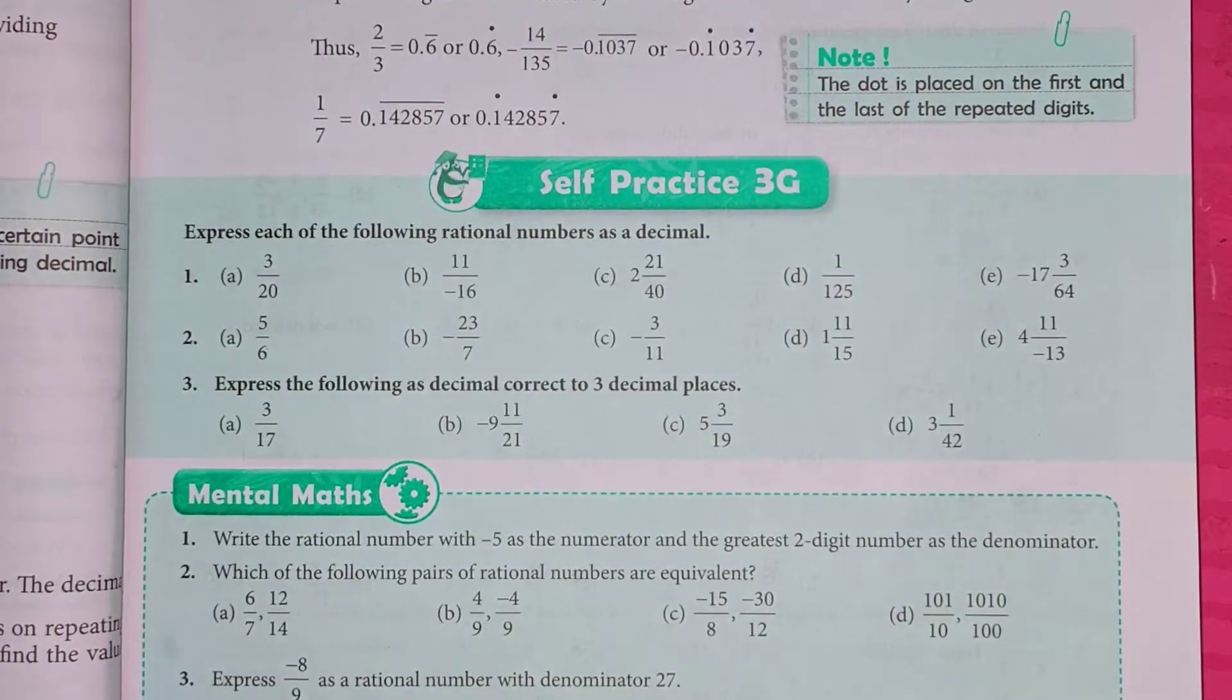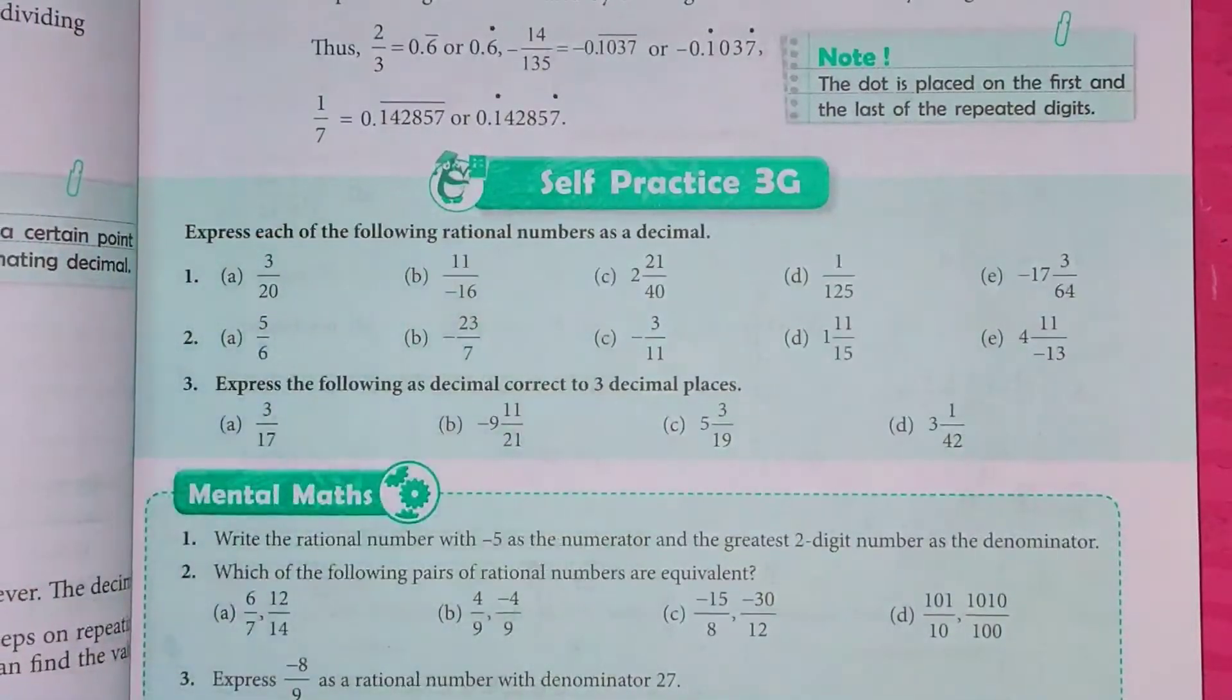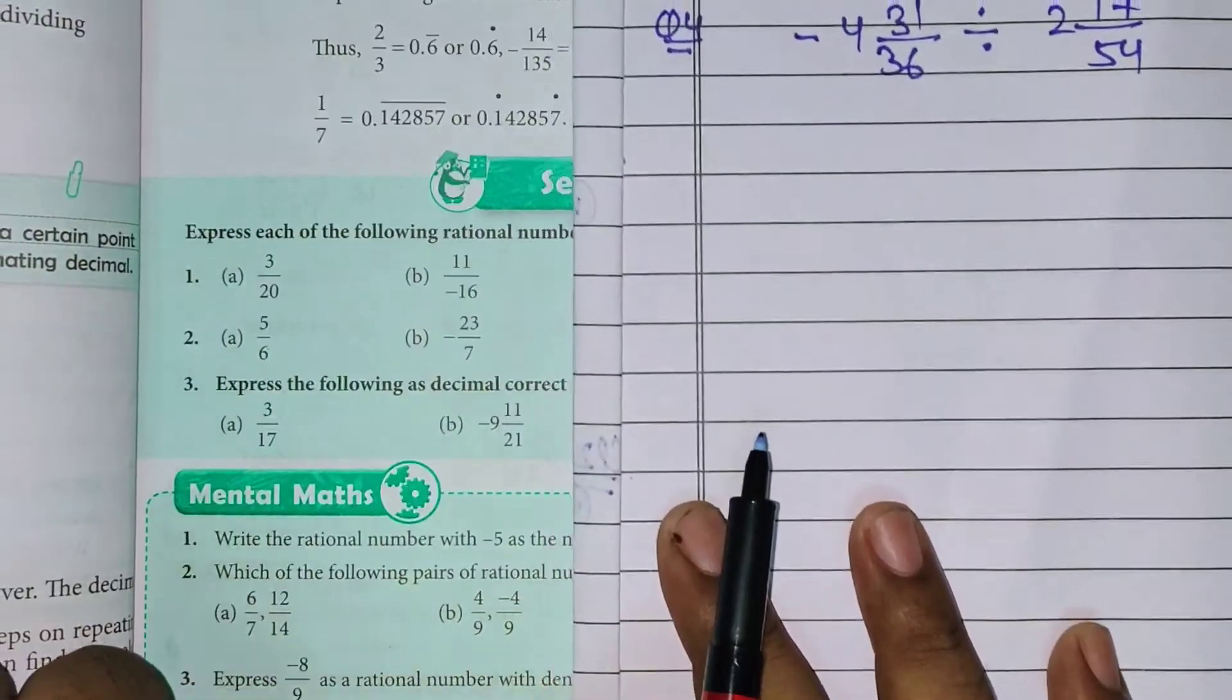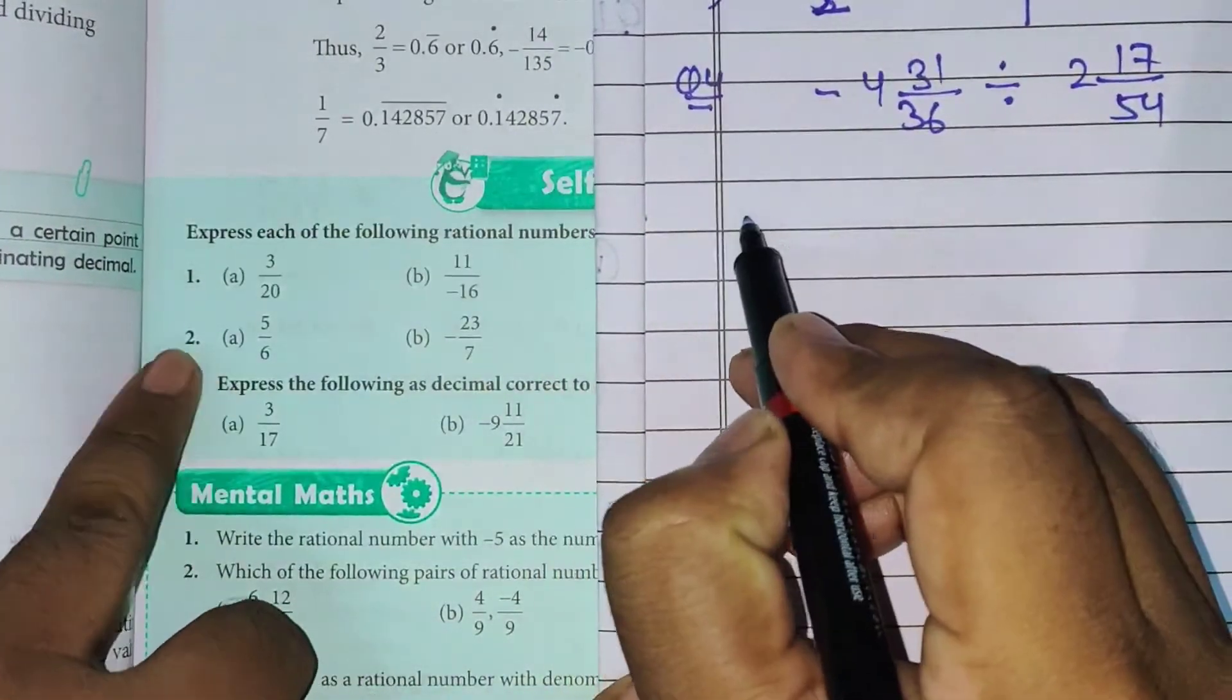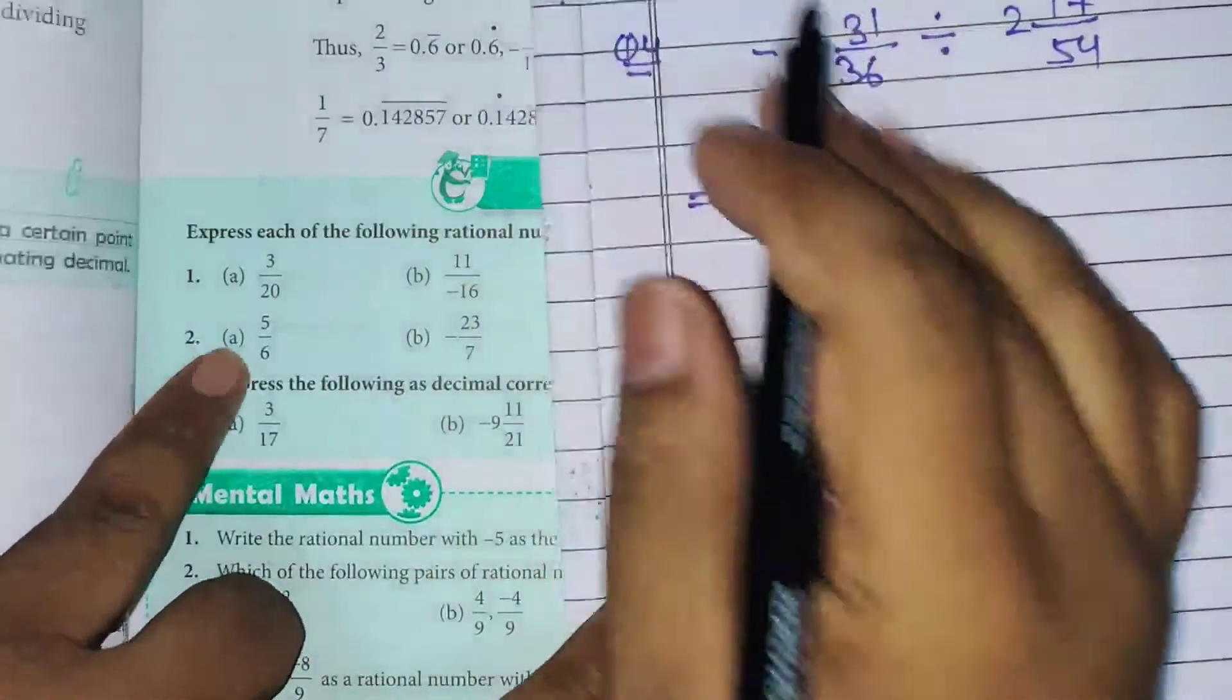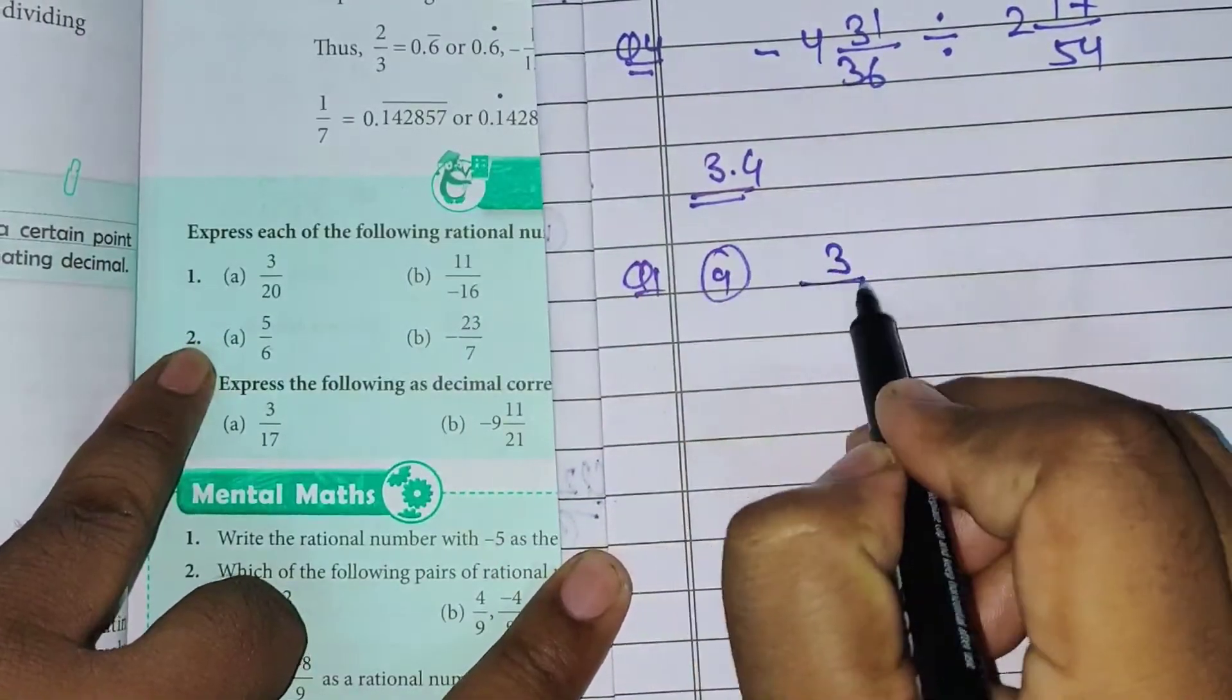First question of self-practice 3G is Express each of the following rational numbers as a decimal. Hamaar paas rational numbers hai jise hamein decimal ki form mein solve karna hai. Question number first a part: 3 upon 20.